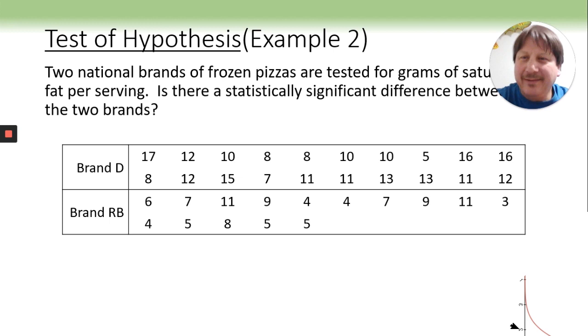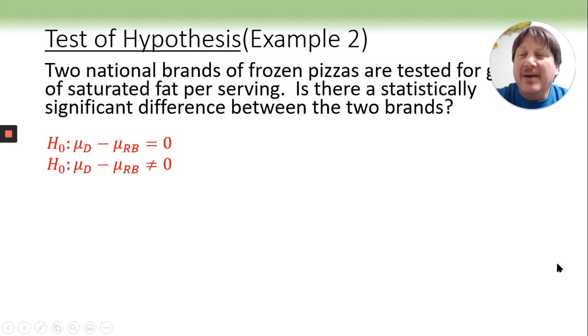Okay, let's get into a second example, and we'll do a test of hypothesis on this one. On this example, we have the data instead of the statistics. Two national brands of frozen pizza are tested for grams of saturated fat per serving. Is there a statistically significant difference between the two brands? We have the data. So first thing, we'll go ahead and write our hypothesis. Typically, you would have the hypothesis before you collect the data. So just looking at this data, it looks like the brand RV does have a smaller average than brand D. But you wouldn't know that until you collected the data. So we are saying, is there a difference? So it is going to be a two-tailed test. So there's our null, where they're the same, and our alternative, where they are just different. So two-tailed.